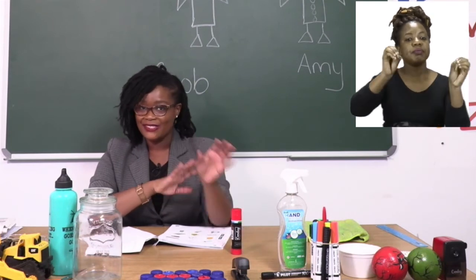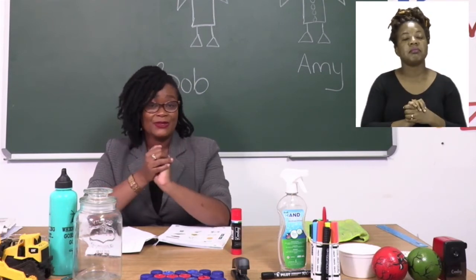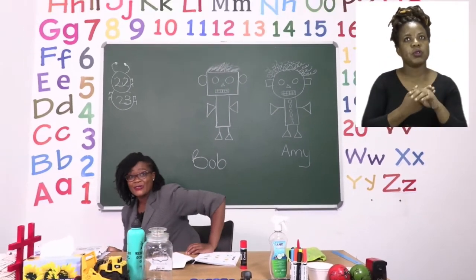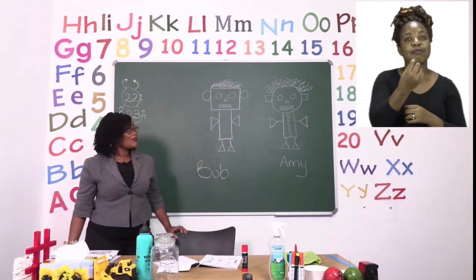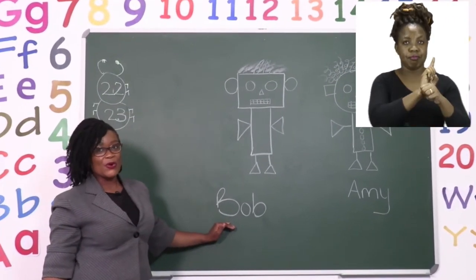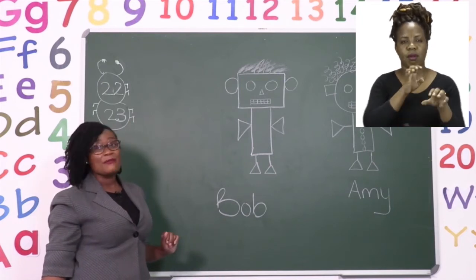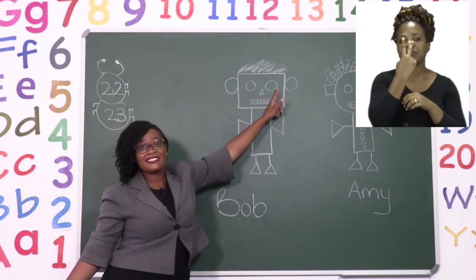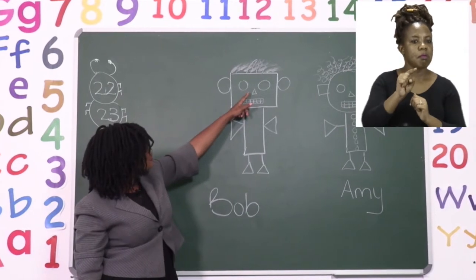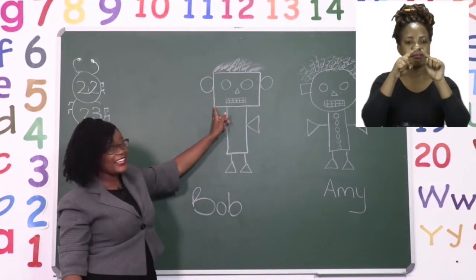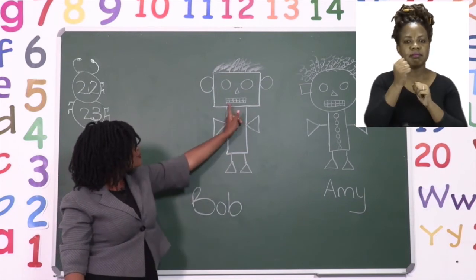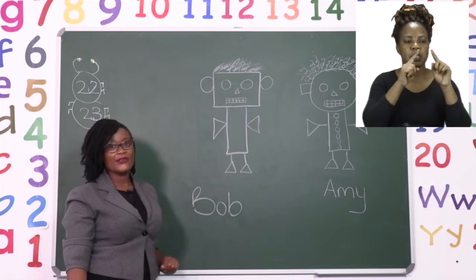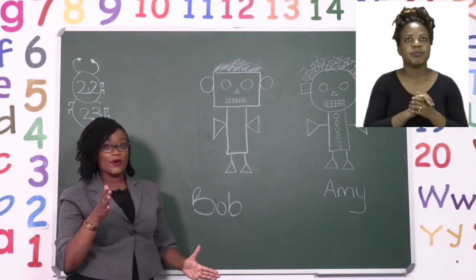I have drawn some beautiful pictures with the same 2D shapes. On the board I have 2 new friends. The first one you can see is Bob the robot. Bob the robot is made up of all the 2D shapes that we have. I have circles, a square for the head, a rectangle for the body, and triangles for the smaller parts of Bob.